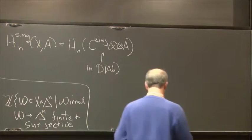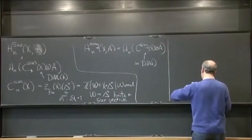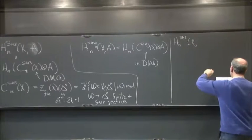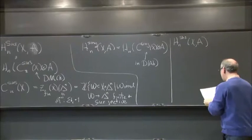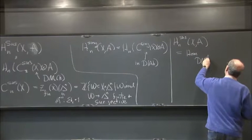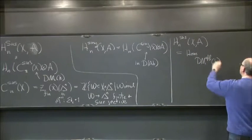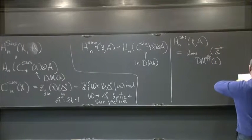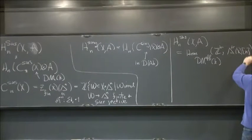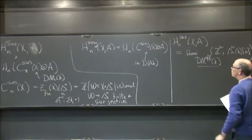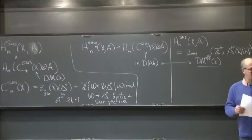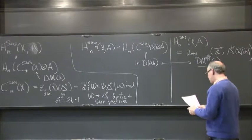We can view this in a somewhat different way: this Suslin homology — and in fact this is one of the guiding principles that led to the construction of these categories — was to interpret it as the maps in Voevodsky's triangulated category of effective motives of an object, so a sheaf Z with transfers into an object — transfers of X of N. This is taking place in a category which you should think of as a motivic analog of the derived category of abelian groups.